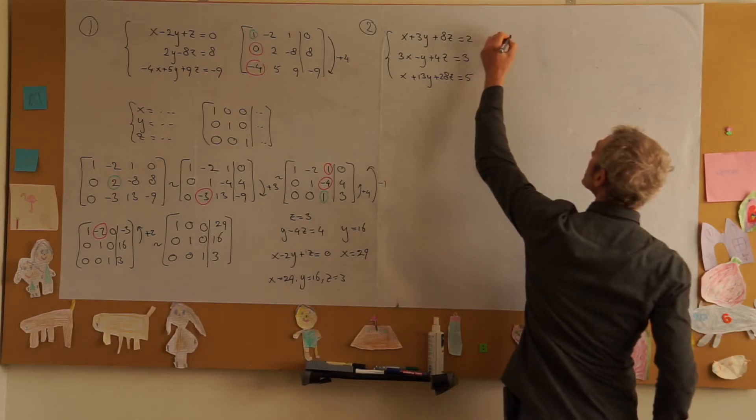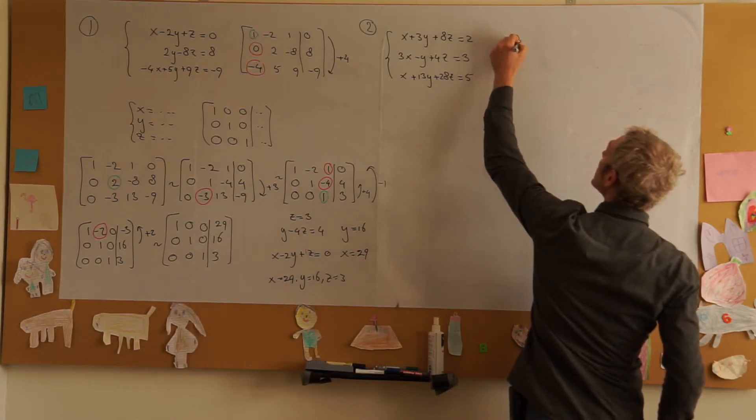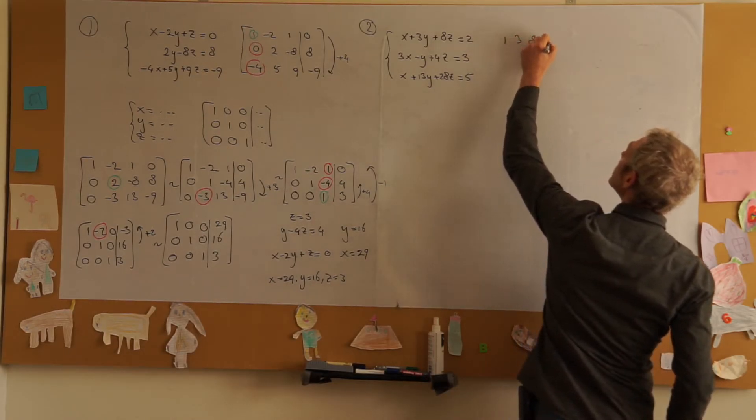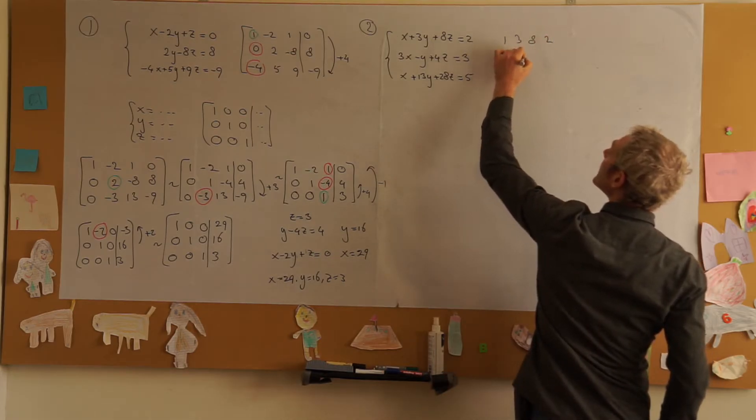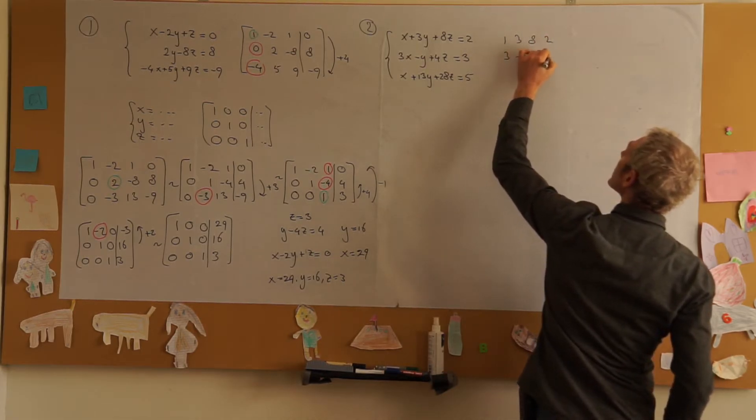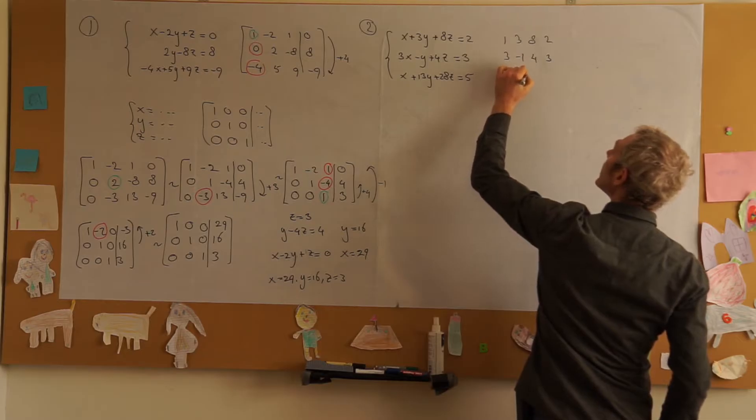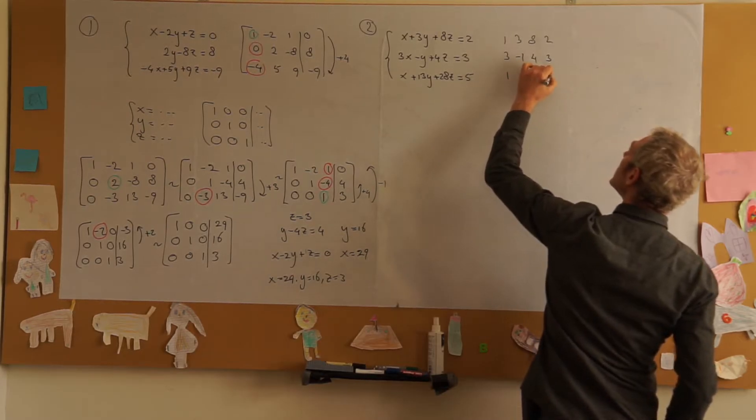First the augmented matrix: 1, 3, 8, 2; 3, -1, 4, 3; 1, 13, 28 and 5.